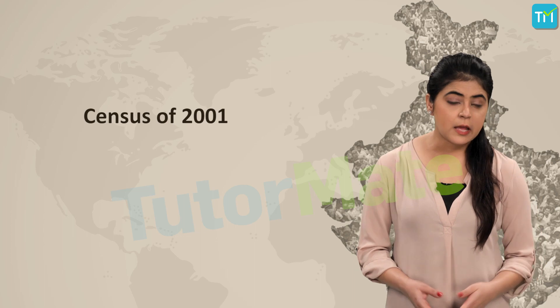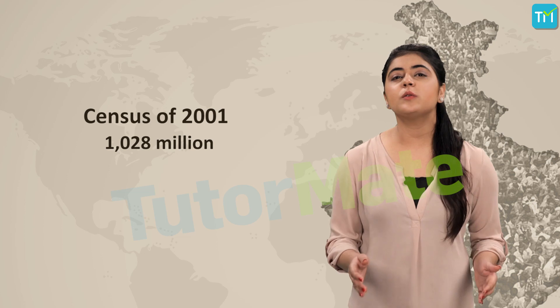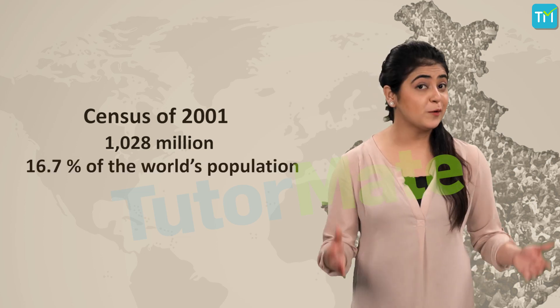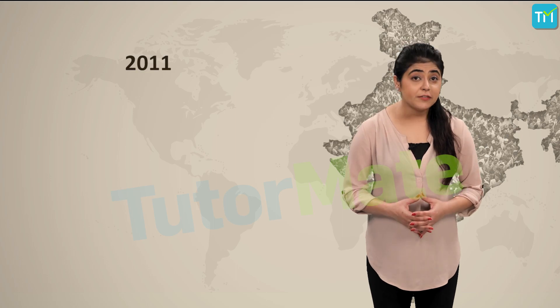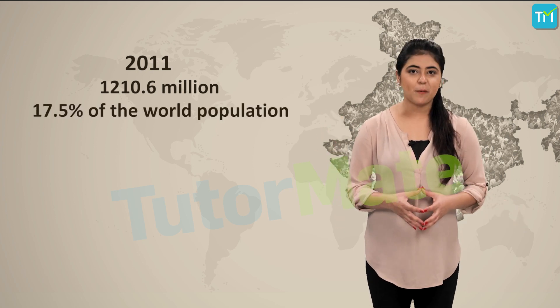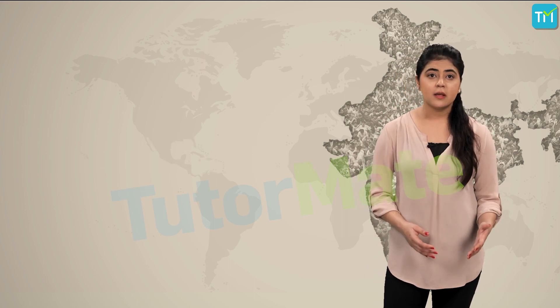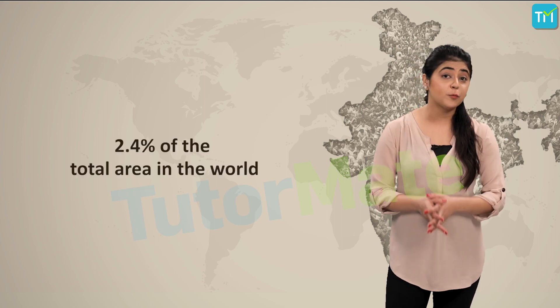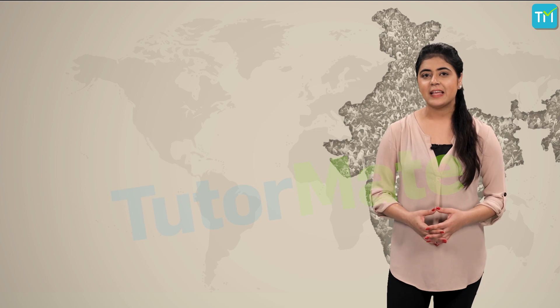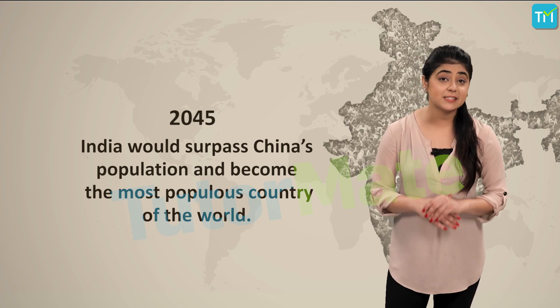According to the census of 2001, the population of India was 1,028 million, and that accounted for 16.7 percent of the world's population. Although India makes up 17.5 percent of the world's population, the people in India occupy just 2.4 percent of the total land in the world. It has been projected that by 2045, India would surpass China's population and become the most populous country in the world.